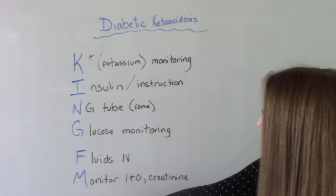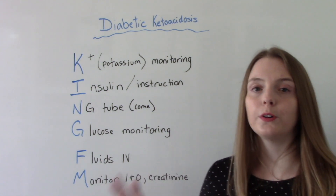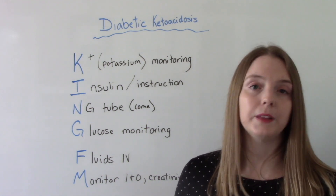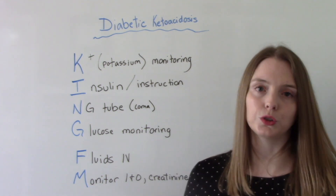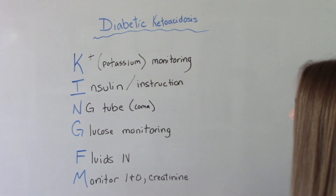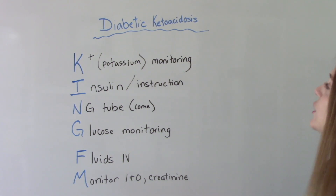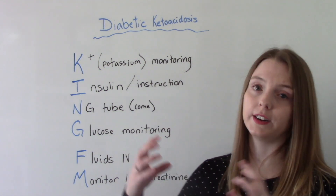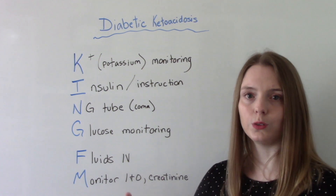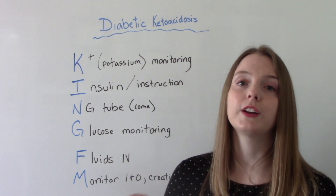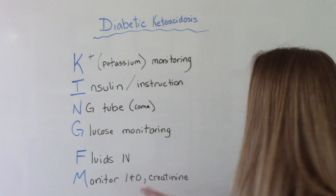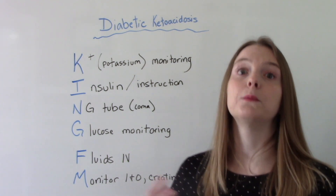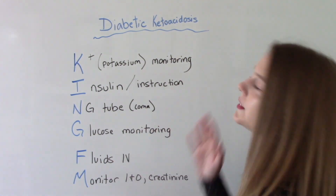And then N is for monitoring I and O — their inputs and outputs. Typically these patients will get an indwelling Foley catheter placed by the nurse so that we can get strict I and O on them. And then also monitoring their creatinine levels. We want to make sure this is not starting to affect the other organs in the body. When you have metabolic acidosis, you have issues with your kidneys — your kidneys are not functioning well. So creatinine is going to be an indicator of how well the kidneys are functioning and whether they are improving with treatment.